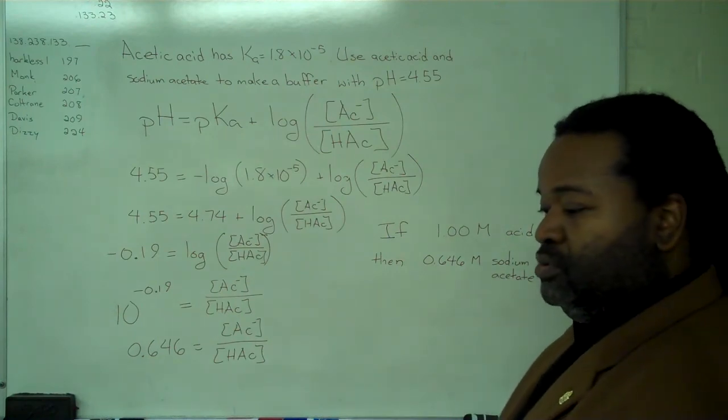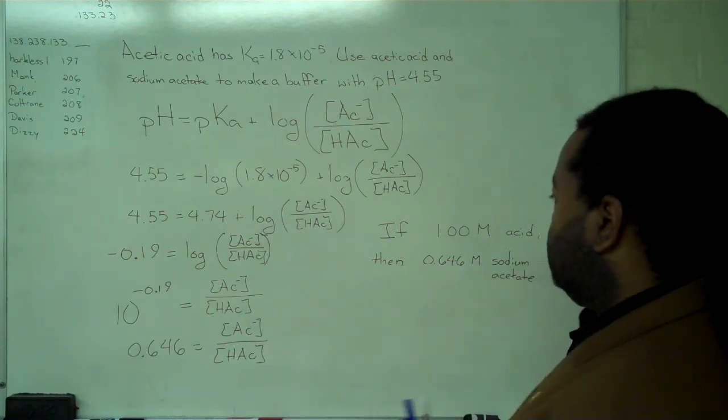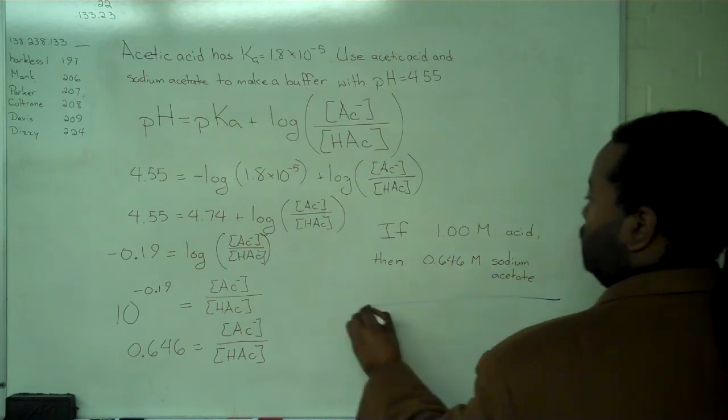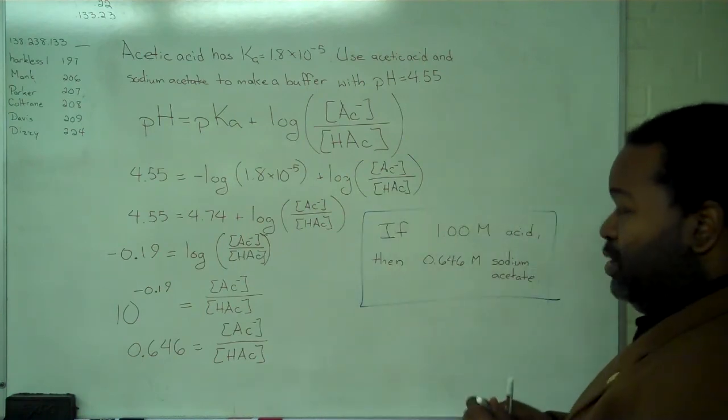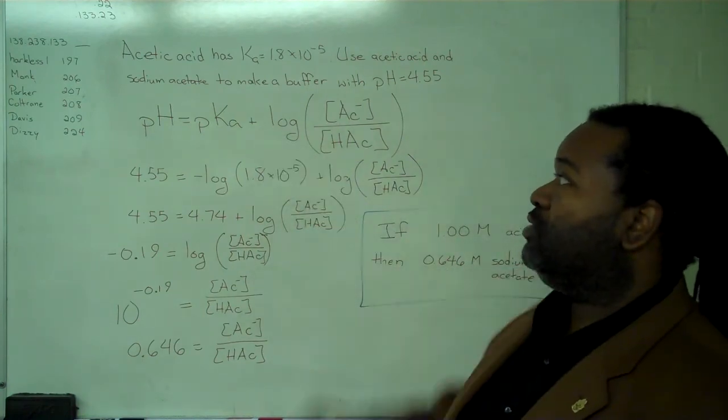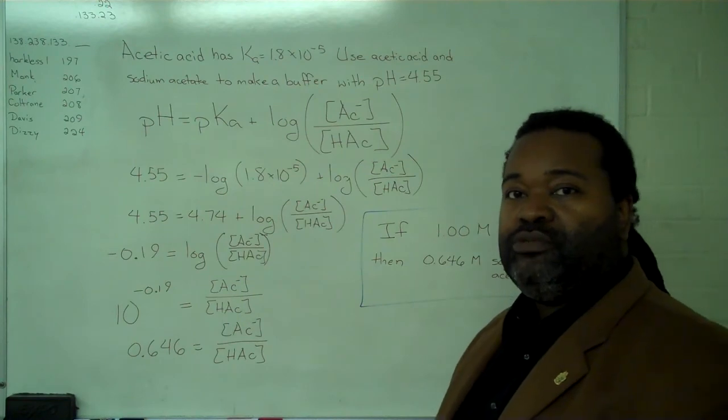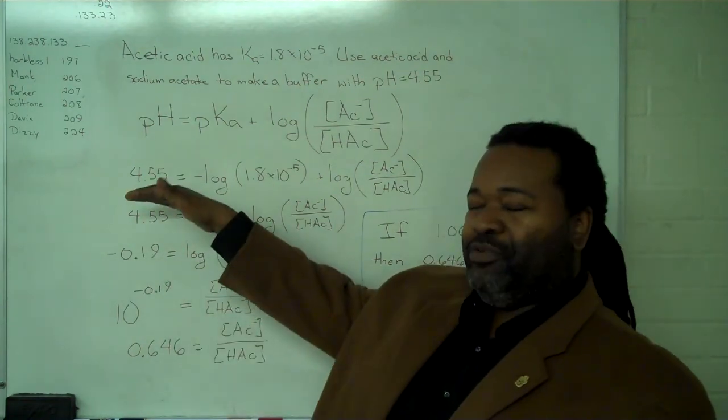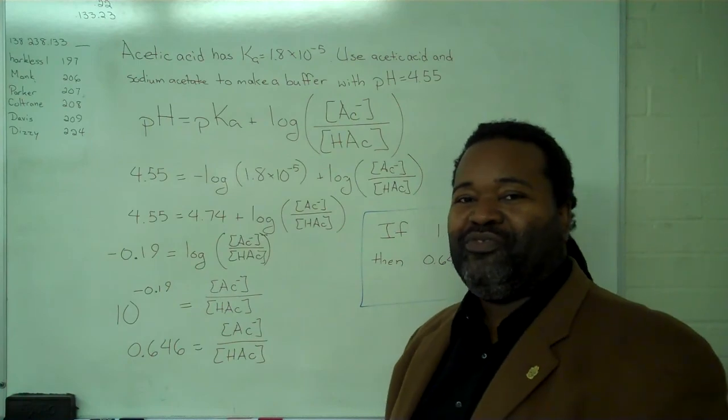Creating a solution with this ratio, by proper application of the Henderson-Hasselbalch equation, we should be able to maintain a buffer pH of 4.55.